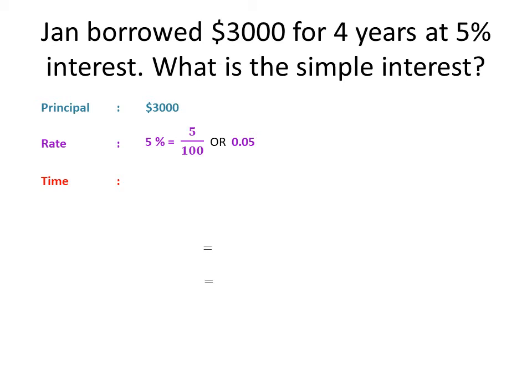Remember, when dealing with percentages we write it as a fraction of 100. Check out my videos on percentages linked in the description for more context. We can also write the rate as a decimal — to do that, divide five by 100, which gives 0.05. The time given in the question is four years. Now you just multiply the values together — it's that simple.